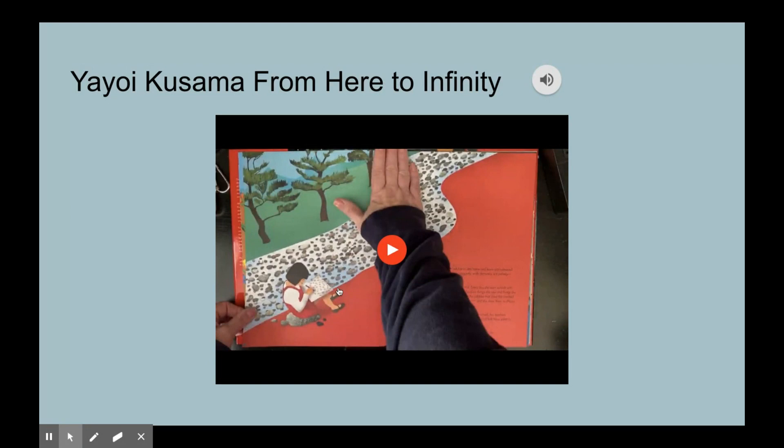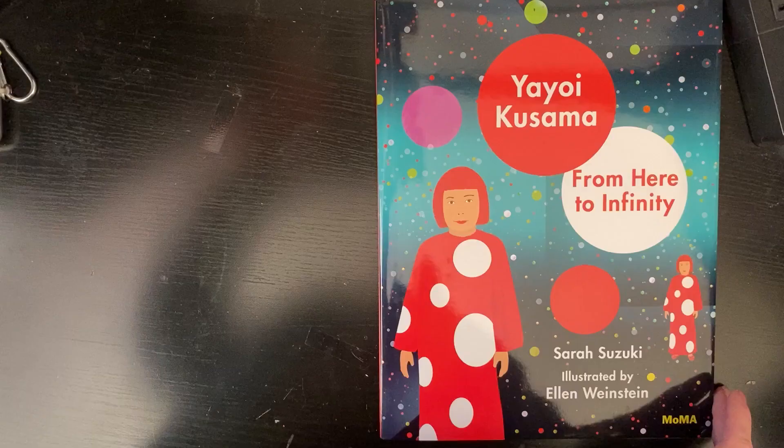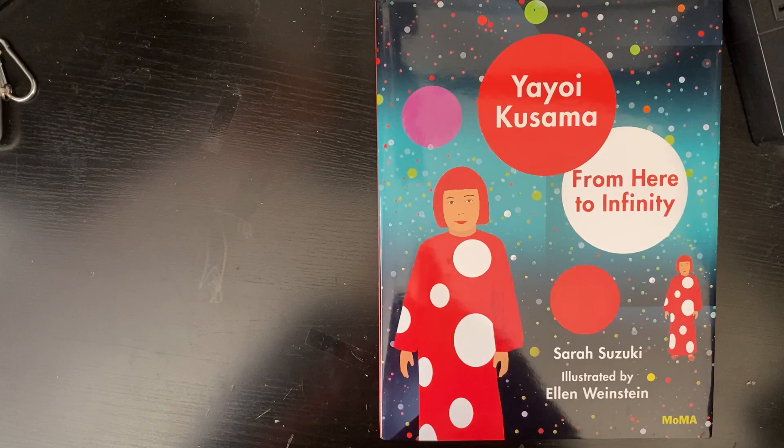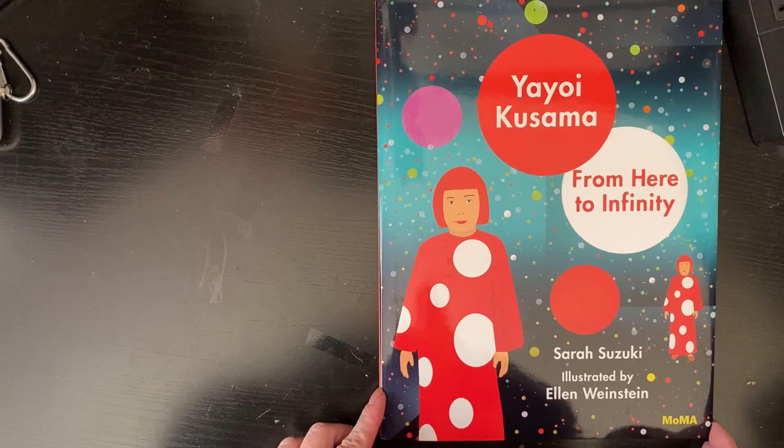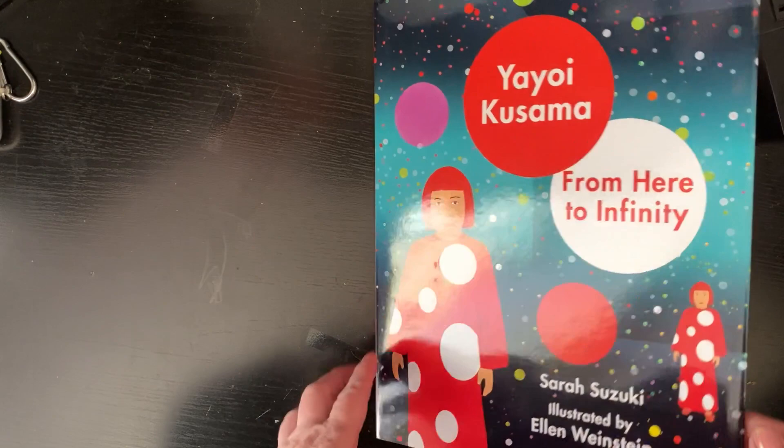Yayoi Kusama from here to infinity. Here you will click on this little red circle and you will get to hear a story about Yayoi Kusama which is very interesting. She is a Japanese artist who came from Japan and lived in New York. This is a story called From Here to Infinity, written by Sarah Suzuki and illustrated by Ellen Weinstein.